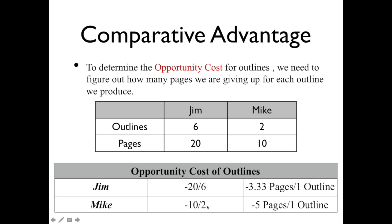Mike gives up 10 pages for every two outlines he produces, or 5 pages for every one outline. I always reduce this to one product — in this case, one outline — to compare the opportunity costs. In this scenario, it actually costs Jim less to make outlines, so he should focus on producing pages.